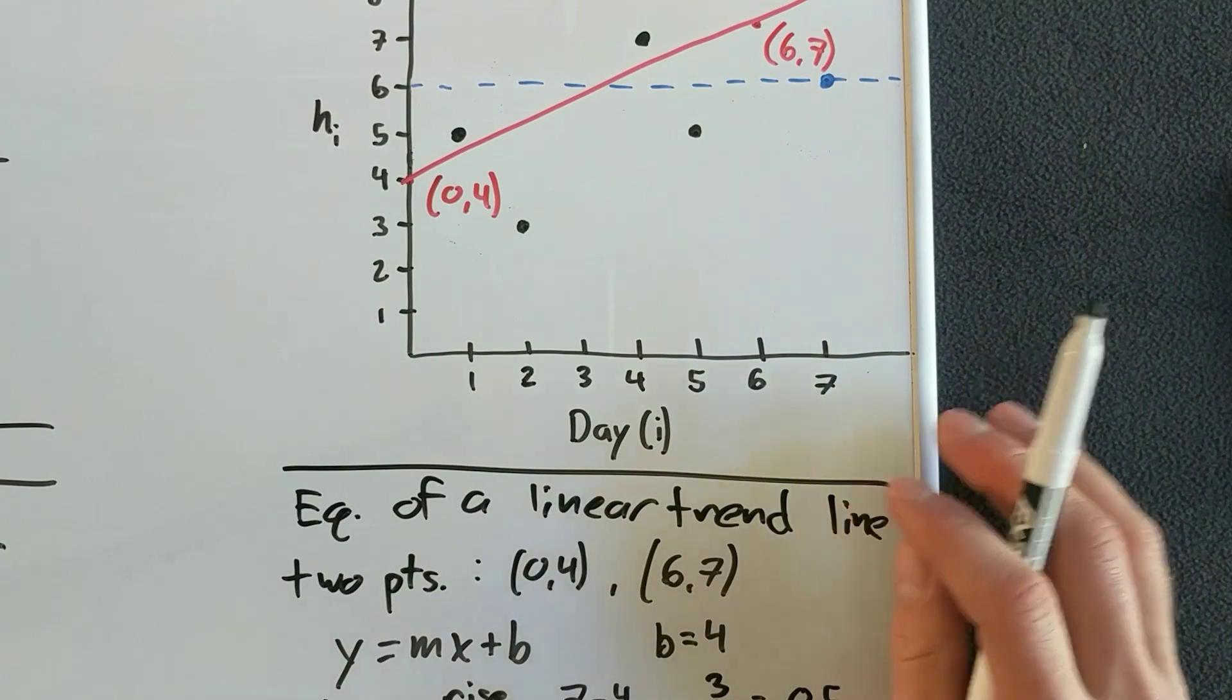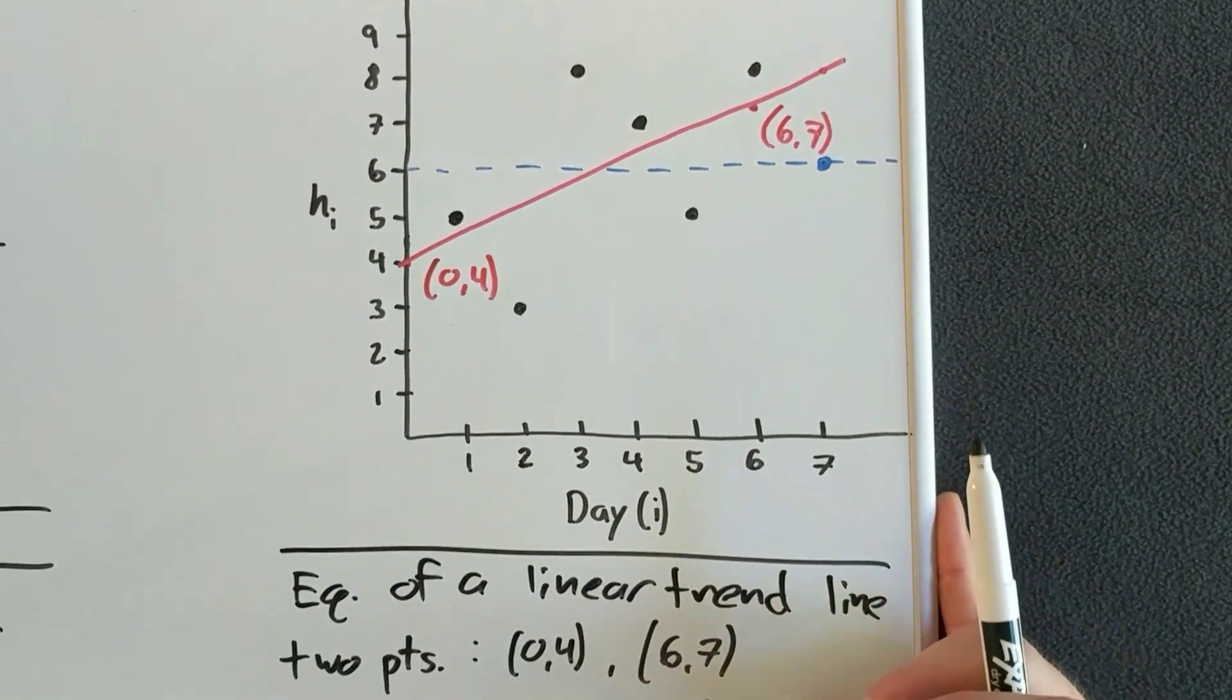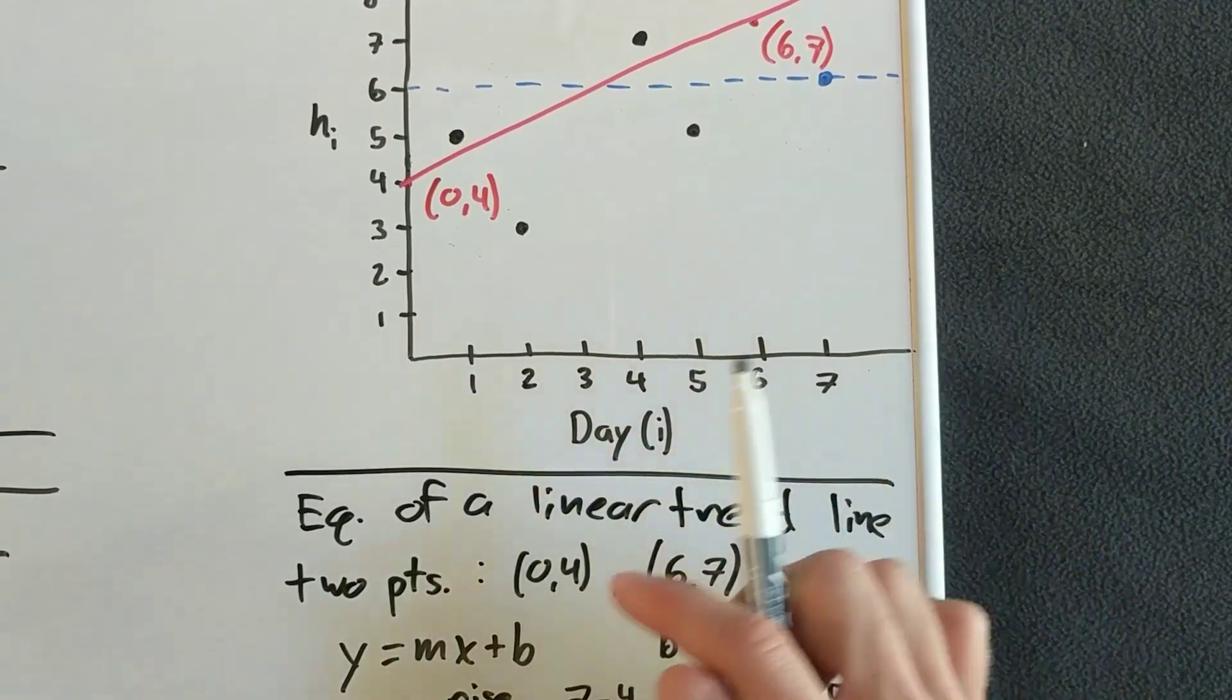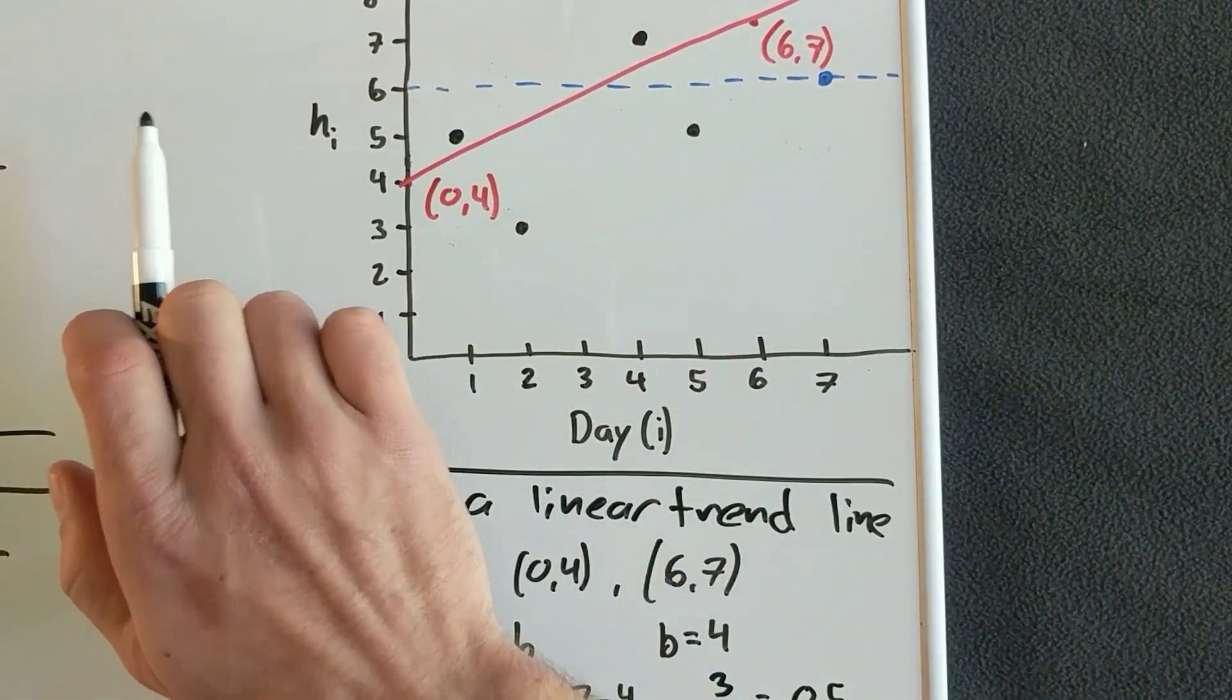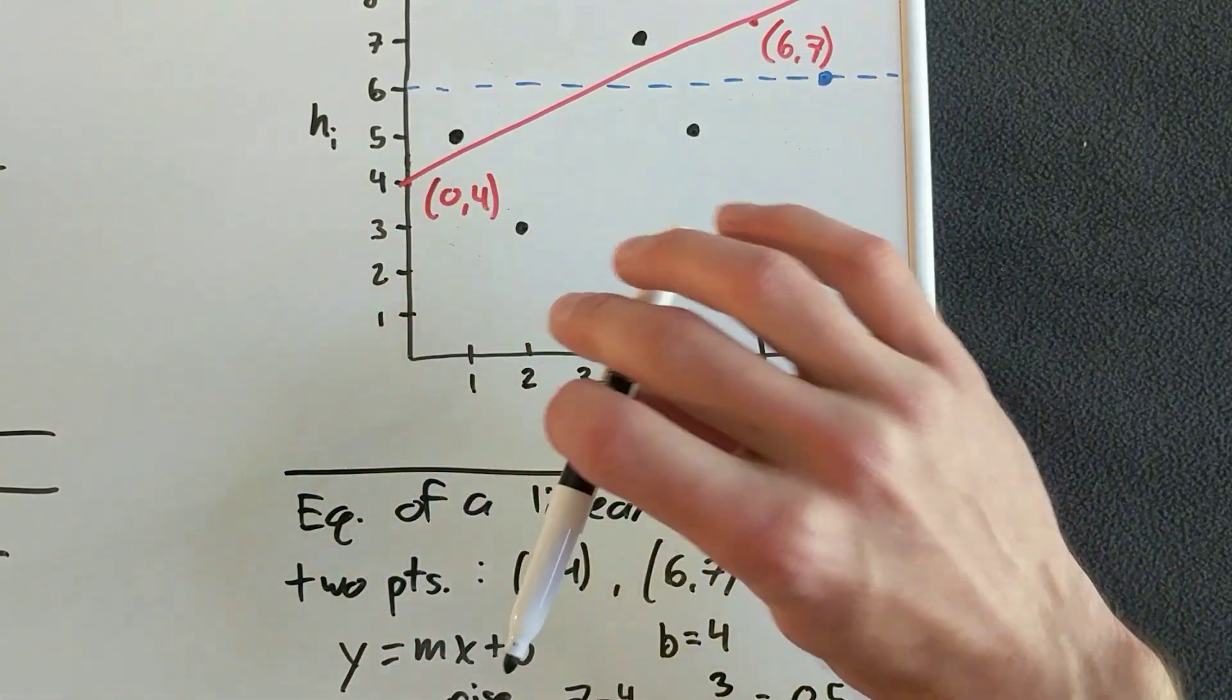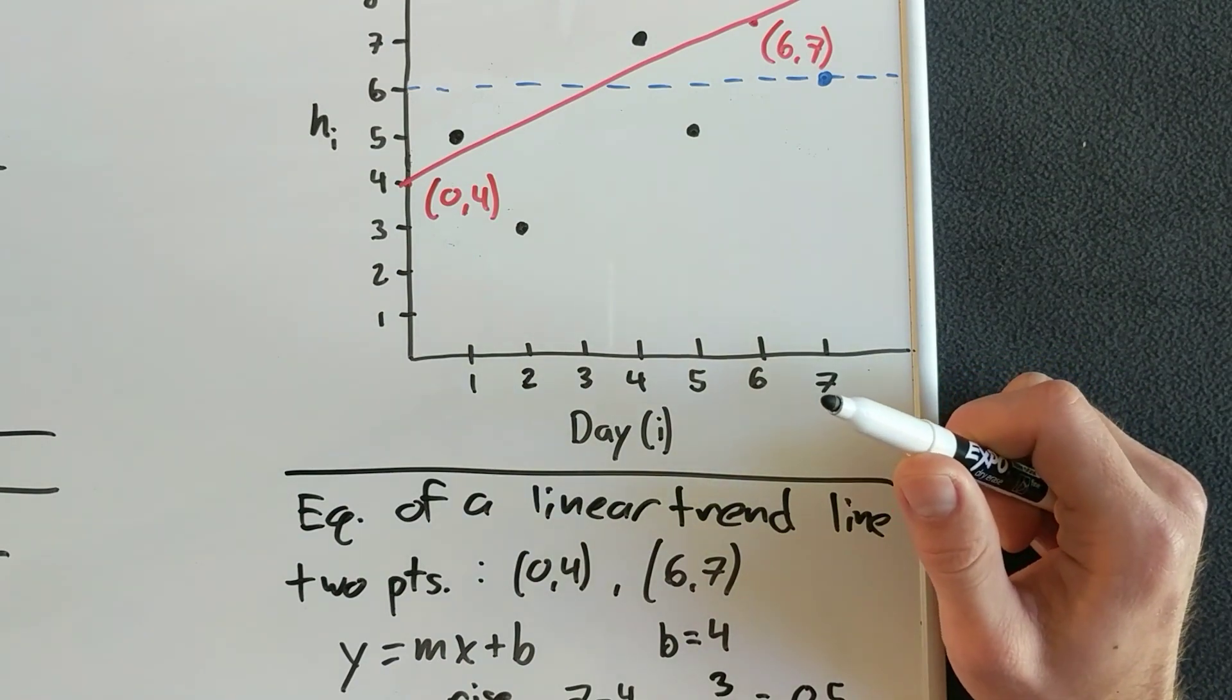I will note that there are lots of excellent resources that probably more clearly explain what a trend line is and how to calculate the equation for it. So I'll put a link up here to the Khan Academy videos. And then I'll also put a link down at the description to the Khan Academy videos, which I think do a great job. Thanks.